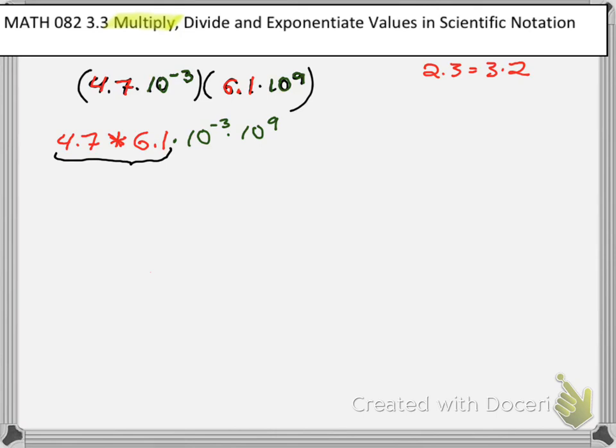So this is the tricky part. This is where it gets a little bit weird. When you multiply 4.7 times 6.1, we get a number that's larger than 10. We get 28.67, okay? And then, over here, remember we have to use the product rule. 9 plus negative 3 is 6. So we get this is 28.67 times 10 to the 6th, okay?